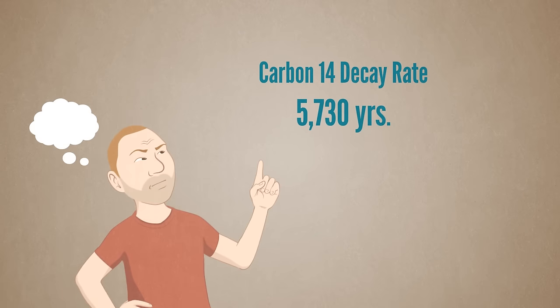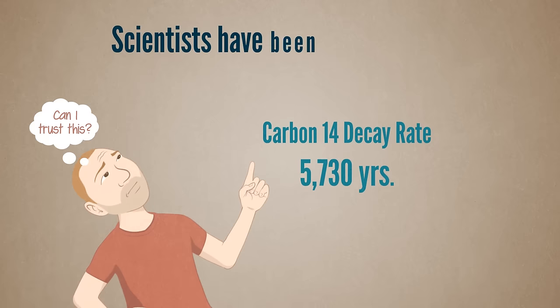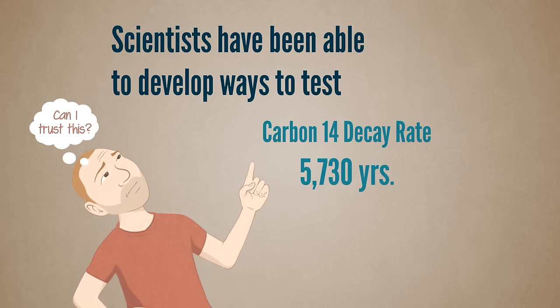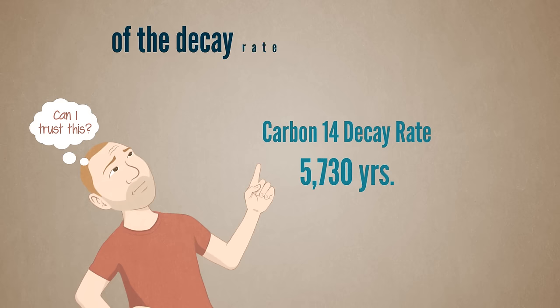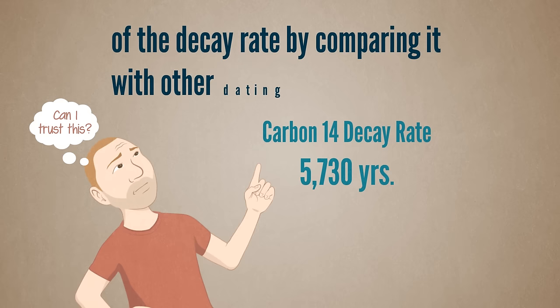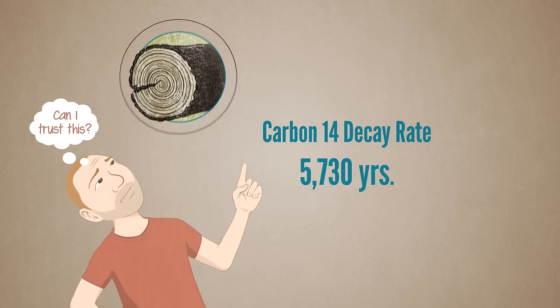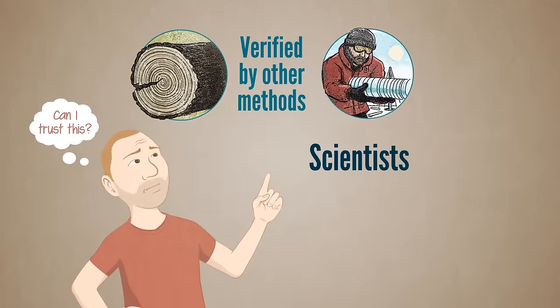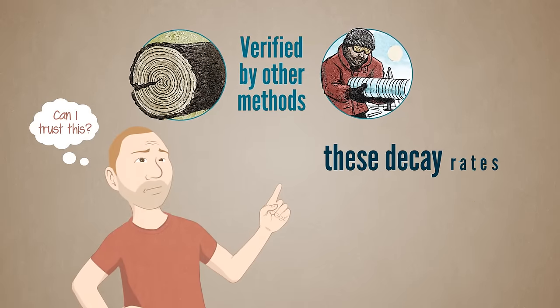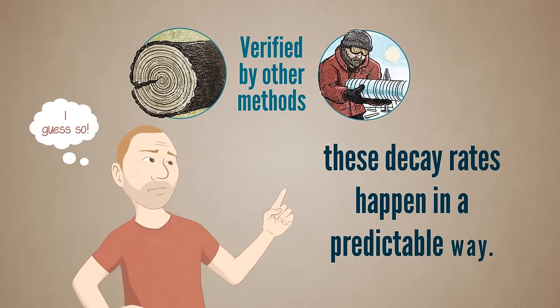People have debated whether these decay rates were constant. But in recent years, scientists have been able to develop ways to test the reliability of the decay rate by comparing it with other dating methods, such as tree rings and ice cores. Scientists have been able to repeatedly confirm that these decay rates happen in a predictable way.